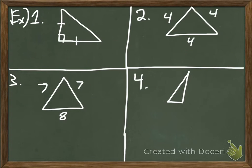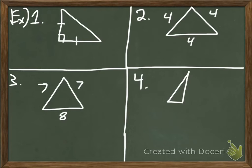Now we have four examples, and I want you to classify each by saying isosceles, equilateral, or scalene. Go ahead and pause the video, and in your group discuss which you think is which.